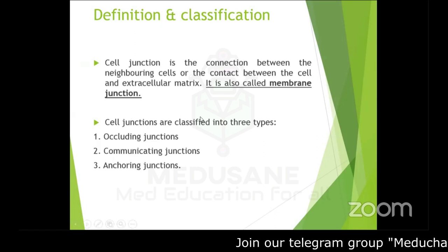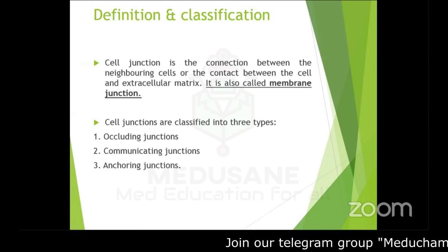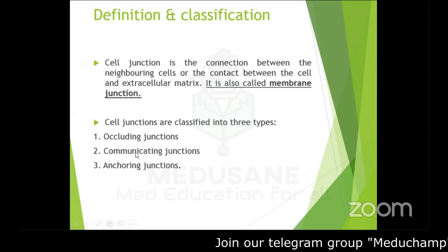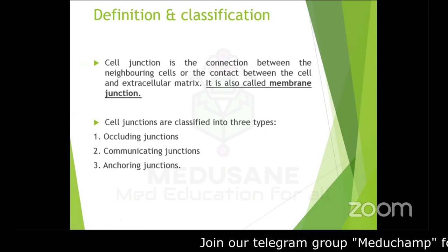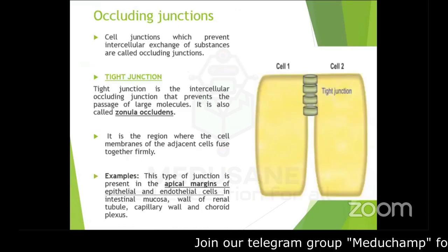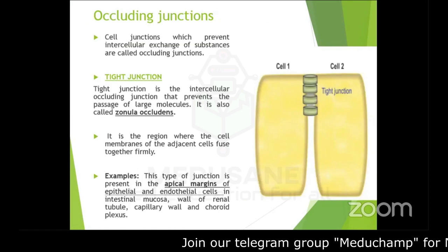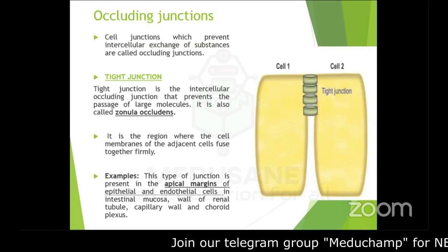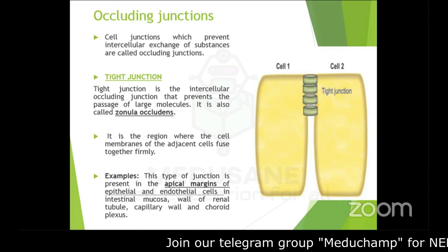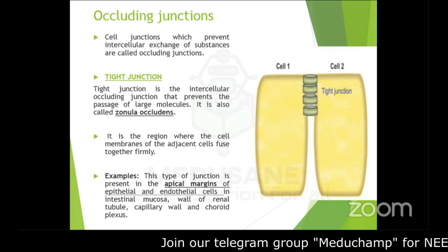Cell junctions are classified into three types: first, occluding junctions; second, communicating junctions; and third, anchoring junctions. Occluding junctions are cell junctions which basically prevent intercellular exchange of substances.